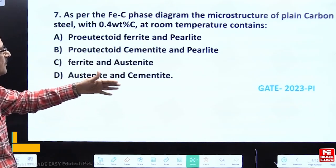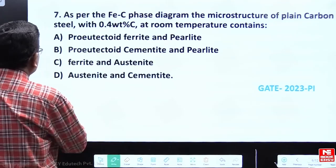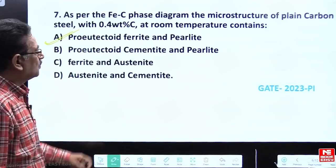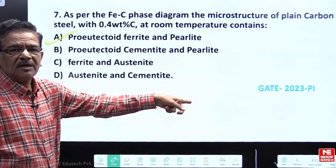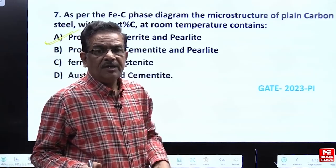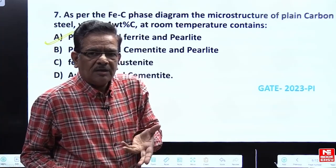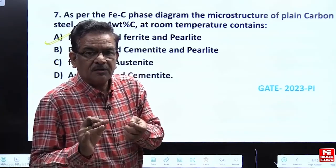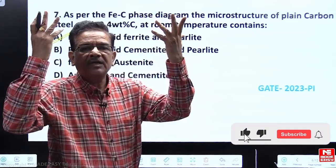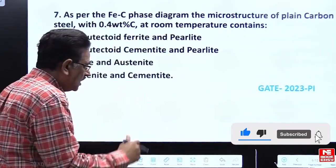Therefore, the correct answer can be tricked by us. A is the correct answer, proeutectoid ferrite and perlite. Always remember, instead of by-hearting, it is more logical to connect every minute with iron-carbon diagram and then store the logic in your mind so that you will never falter in answering the question.